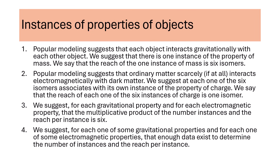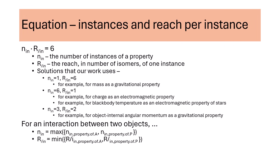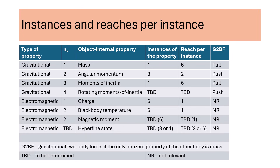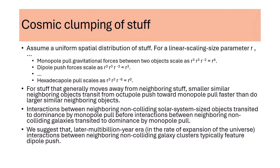We suggest, for each of some gravitational properties and some electromagnetic properties, that enough data exists to determine the number of instances and the reach per instance. This slide states the one equation that we suggest adding to popular modeling. The examples of suggested uses of solutions to the equation include ones we have discussed and one that pertains to black body radiation, for example from stars. We suggest that ordinary matter charge does not interact with black body radiation from dark matter stars. This slide states instances of properties and reaches per instance that our work suggests. Our notions of multipole expansions can help explain cosmic clumping of stuff. Two similar non-colliding objects can transit portions of a sequence that starts with octopole gravitational repulsion and ends with monopole gravitational attraction. We suggest that pairs of neighboring similar smaller objects, such as solar systems, transit the sequence more rapidly than do pairs of neighboring larger objects such as galaxies.